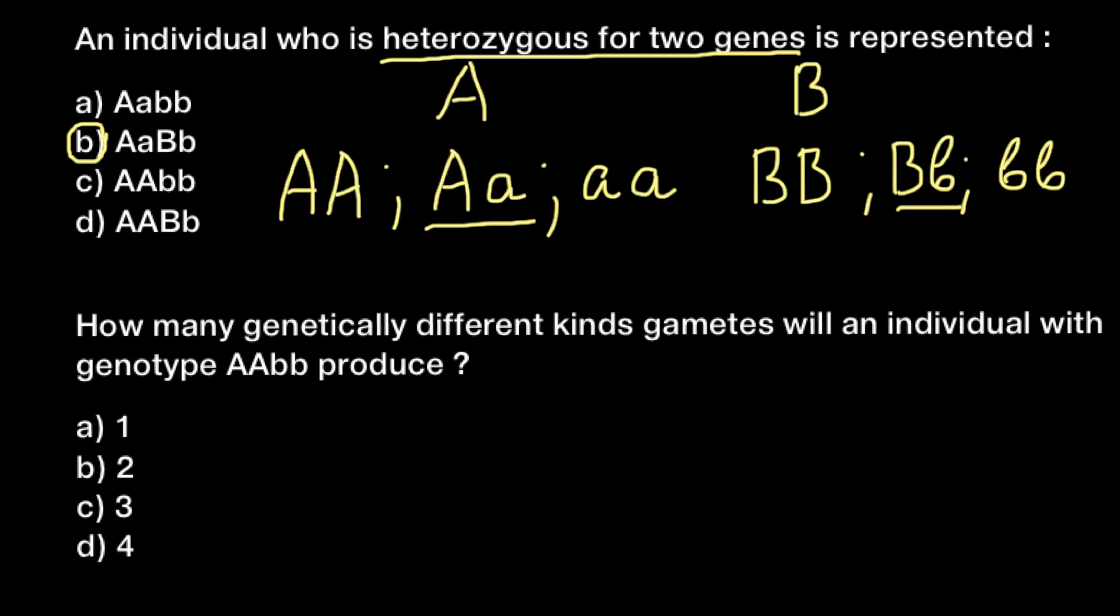And the next question: how many genetically different kinds of gametes will an individual with genotype capital A capital A and small b small b produce? Let me write this genotype: capital A capital A, or homozygous dominant for A, and homozygous recessive for gene B. And this would be a diploid organism and of course gametes would be haploid, so only one of the alleles may end up in the gamete. So different combinations may exist and let's count how many different combinations we may have here.